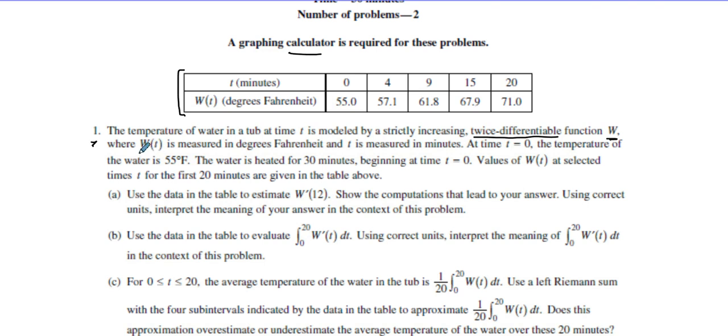W(t) is measured in degrees Fahrenheit and t is measured in minutes. At time t equals 0, the temperature of the water is 55 degrees Fahrenheit. The water is heated for 30 minutes beginning at time t = 0. Values of W(t) for selected times from 0 to 20 minutes are given in the table above, so we don't have it from 20 to 30, but we'll see what they have in store for us.